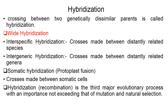In interspecific hybridization, the crosses are made between distantly related species. In intergeneric hybridization, crosses are made between distantly related genera. When crossability is a problem in either type, we go for somatic hybridization, that is through protoplast fusion, where crosses are made between somatic cells.